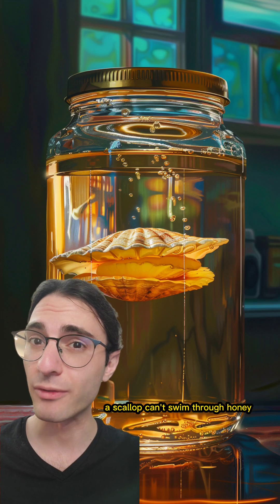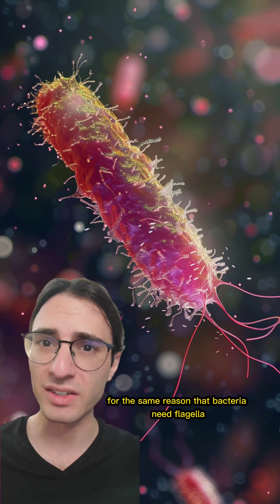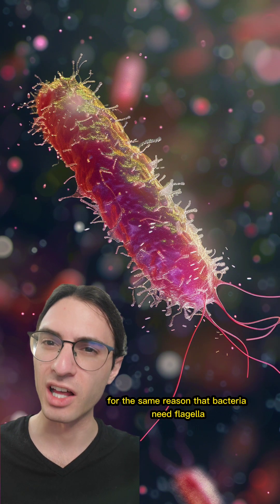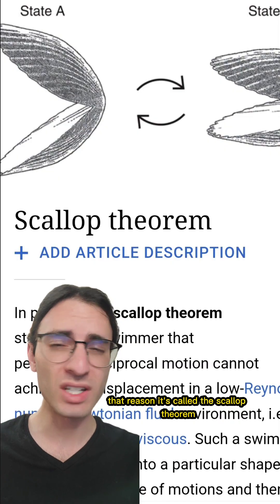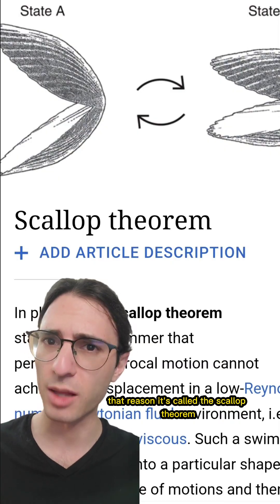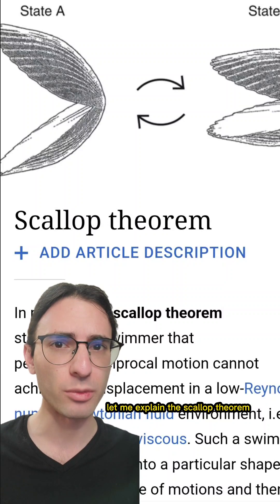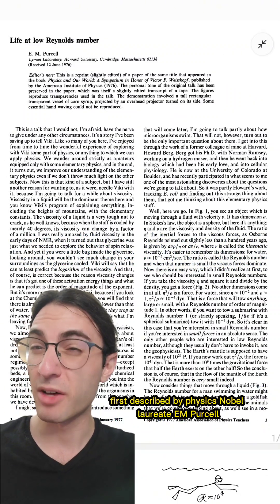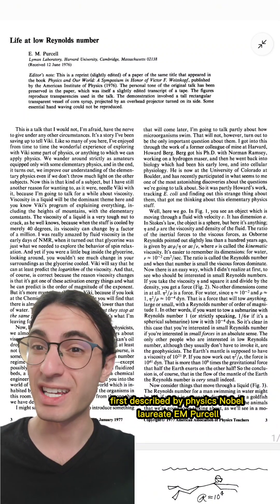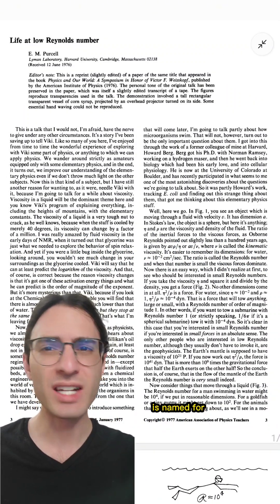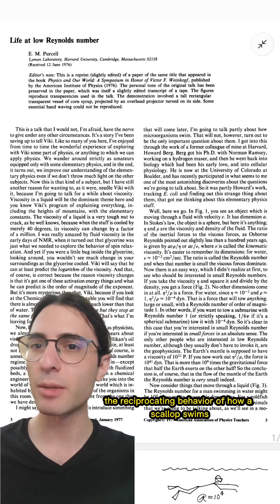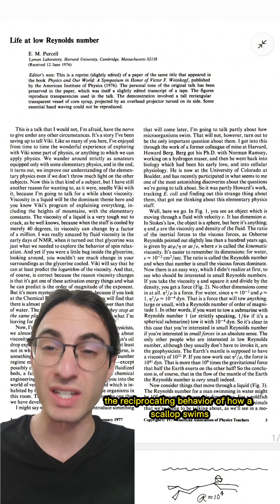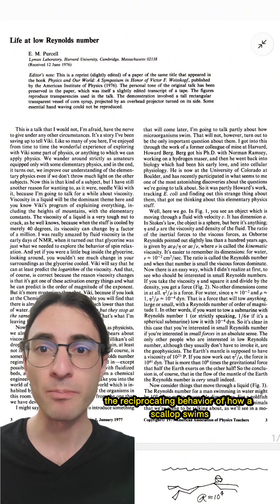A scallop can't swim through honey for the same reason that bacteria need flagella. That reason? It's called the scallop theorem. The scallop theorem, first described by physics Nobel laureate E.M. Purcell, is named for the reciprocating behavior of how a scallop swims.